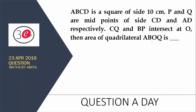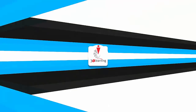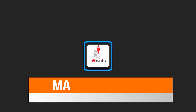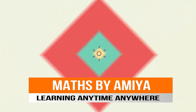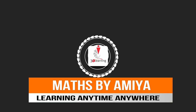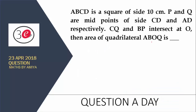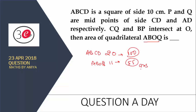Now we need to check the solution. We know the ratio of ABOQ to ABCD is 20 to 11. If the area of 20 is 100, then the area of 11 is nothing but 55. So the answer of this question is 55. If you know this ratio, you can solve it within seconds.